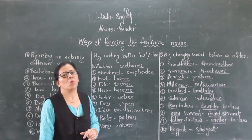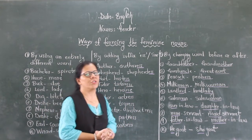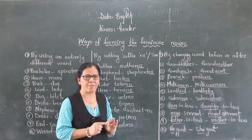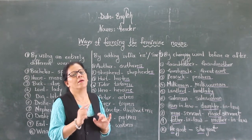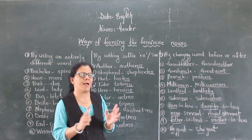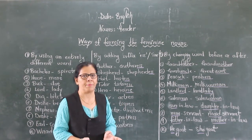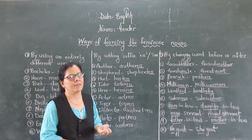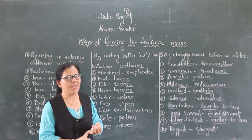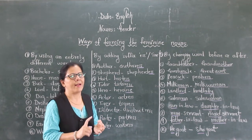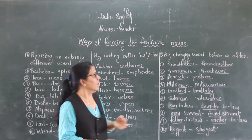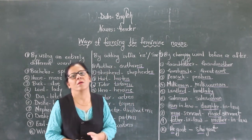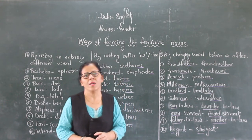So these are the three ways by which we can form feminine nouns. In today's session we have learned nouns gender. Gender means male or female. There are four kinds of genders: masculine — that is male; feminine — that is female; common — means either male or female; and neuter — means neither male nor female. Then we have also seen the three ways of forming feminine nouns: first by using an entirely different word; second by adding the suffix -ess; and third by changing the word before or after. I hope you have understood the concept of nouns gender. That's all. Thank you.